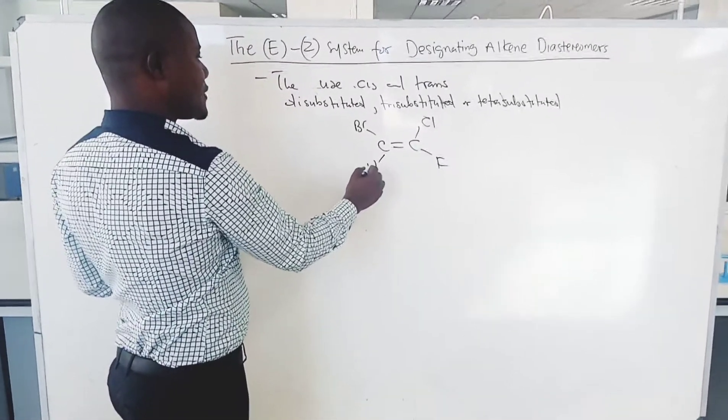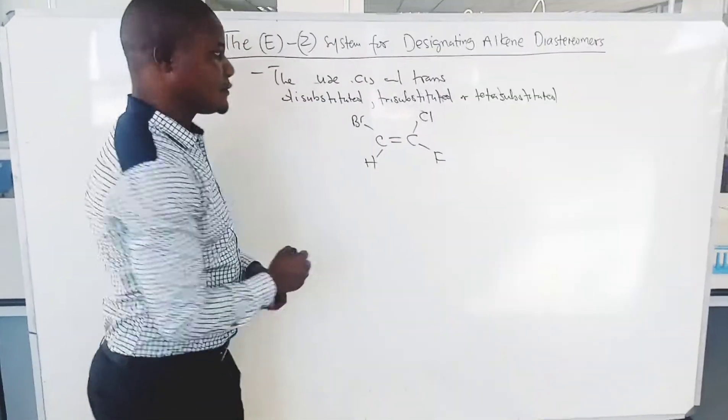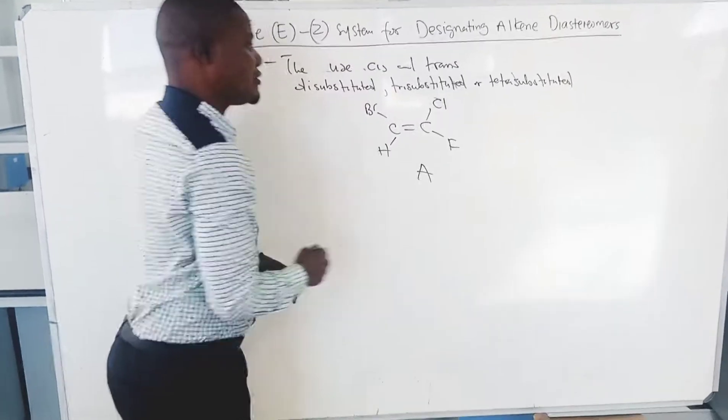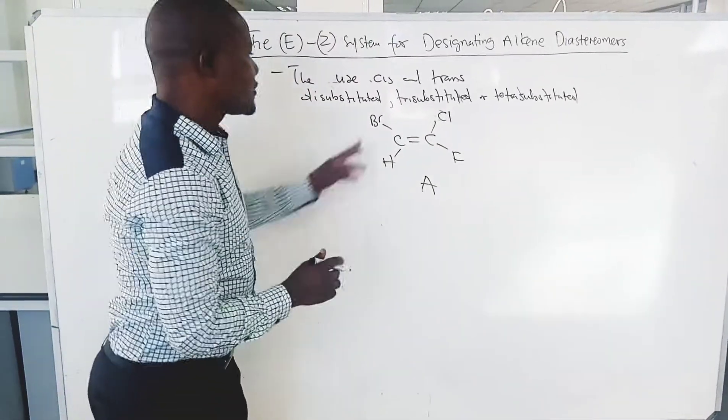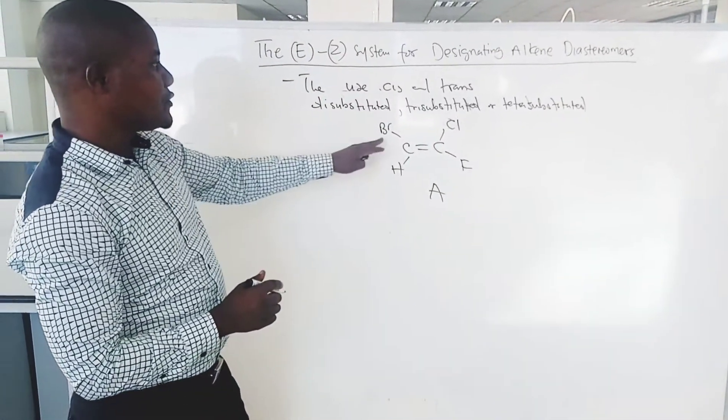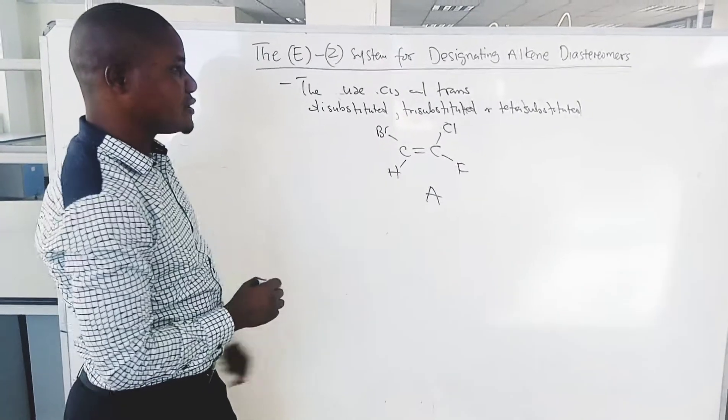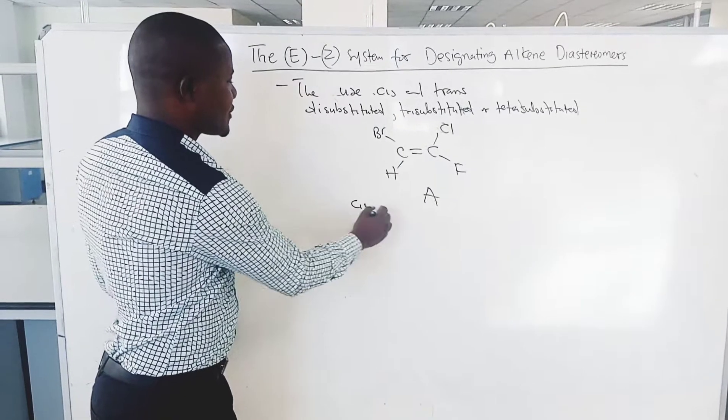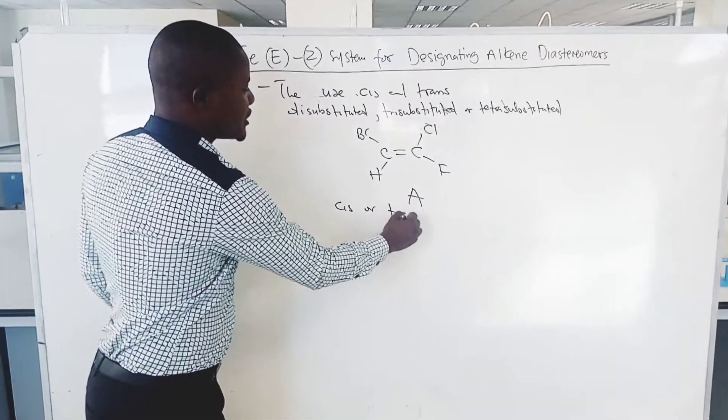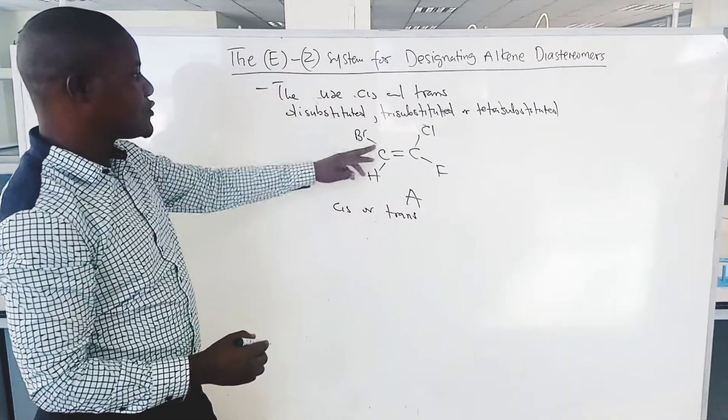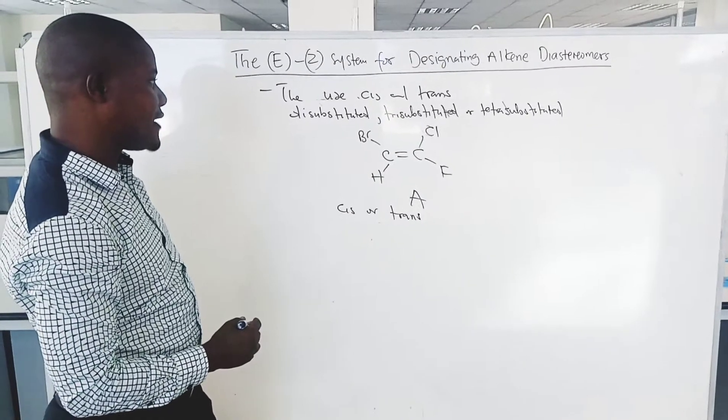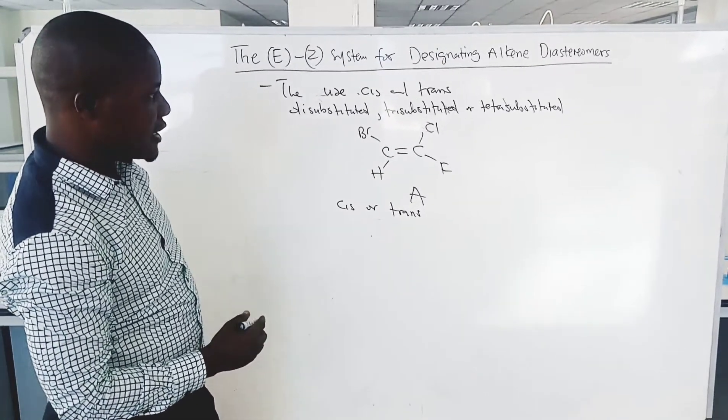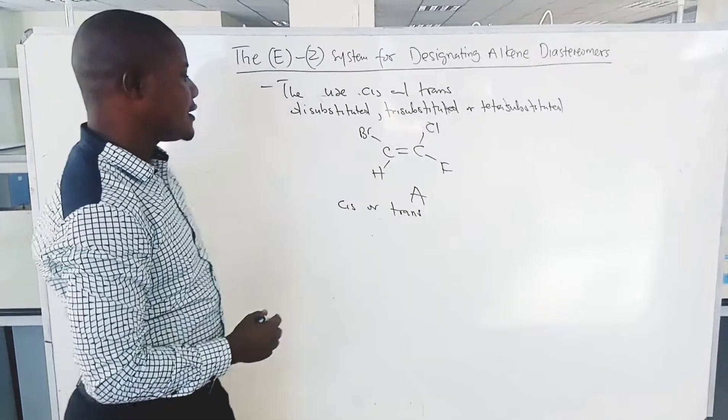So we'll name this compound as A. So, it is impossible to designate compound A with cis or trans because no two groups are the same and compound A is trisubstituted.